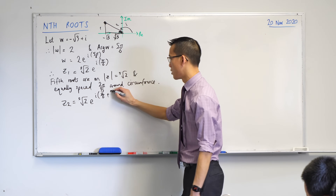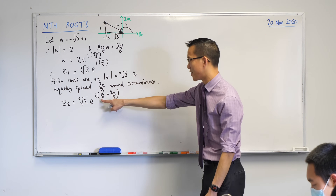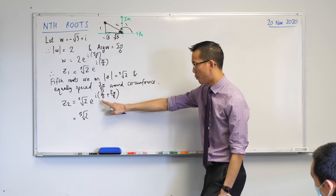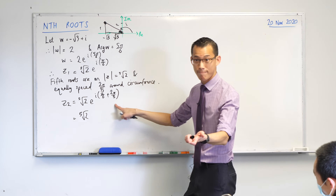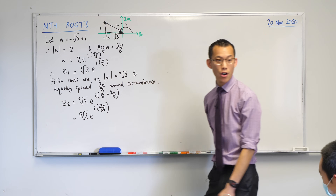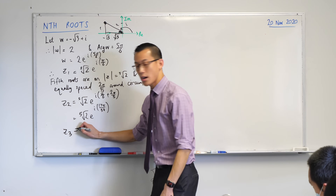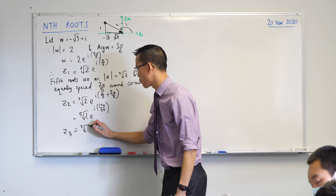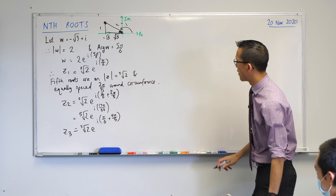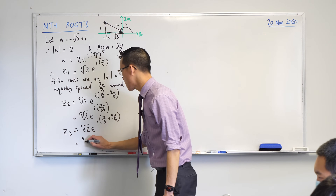At this point feel free to reach for your calculator. π/6 plus 2π/5: put in one sixth plus two fifths and you get 17π/30 - verify the denominator looks right. So z2 = ⁵√2 · e^(i·17π/30). Then for z3, go another 2π/5 further. The calculator gives 29π/30. So z3 = ⁵√2 · e^(i·29π/30).